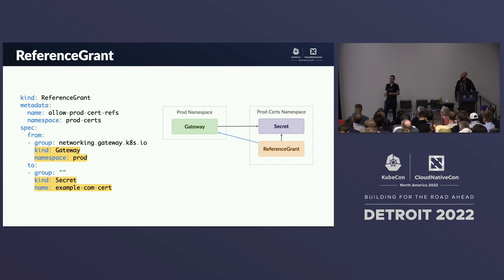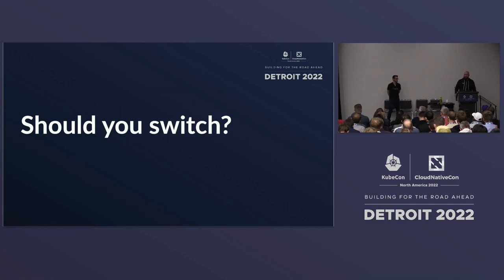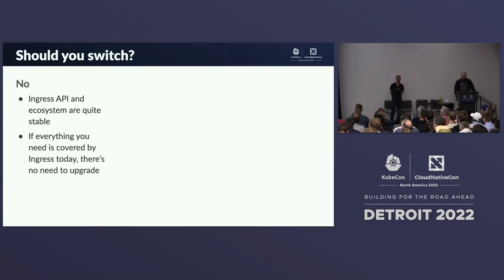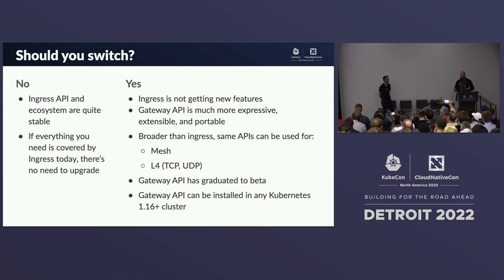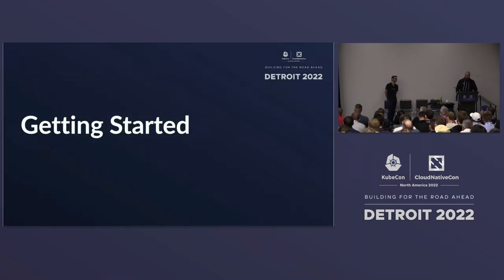Should you switch? Maybe not — if the Ingress API is doing everything you need, you may not need to switch. But Ingress is really not going to get new features; it's kind of complete. Gateway API will have many new features — it's more expressive, extensible, and portable. We're also going broader than Ingress: working on service mesh and L4 load balancing use cases. It's graduated to beta, it's a CRD-based API, and you can install it on any cluster with Kubernetes 1.16 or greater.